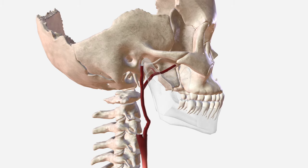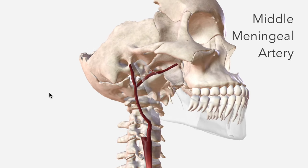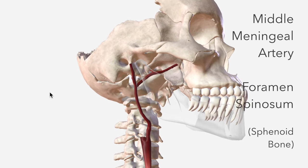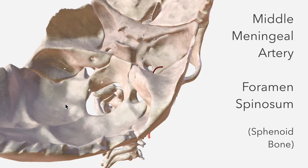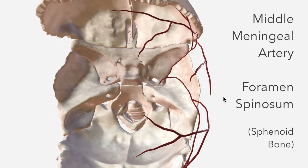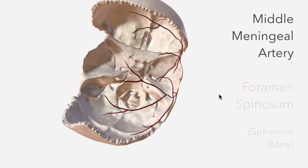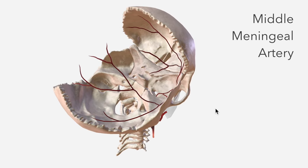The next branch of the maxillary artery is the middle meningeal. It passes through the foramen spinosum of the sphenoid bone. Heading inside the skull for a better view: this is the sphenoid bone, this is the foramen spinosum — its most lateral foramen — and this is the middle meningeal artery passing through it. The middle meningeal has a broad branching pattern and supplies the bones of the calvarium as well as the dura mater in this area.